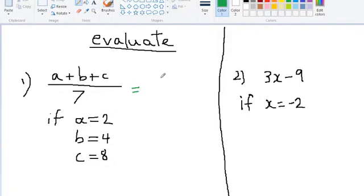In order to evaluate these we need to substitute. For each letter we must replace that letter by the given number. So instead of a we will write 2, plus b will now change into 4, plus c will now change into 8, all over 7.